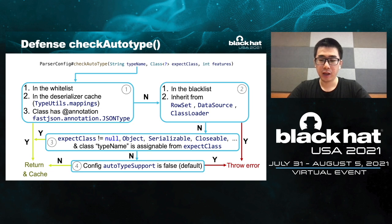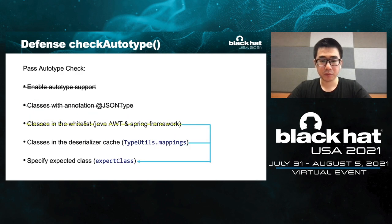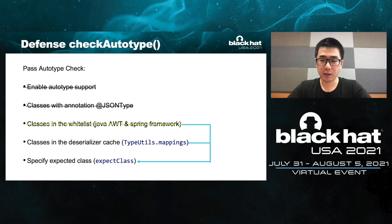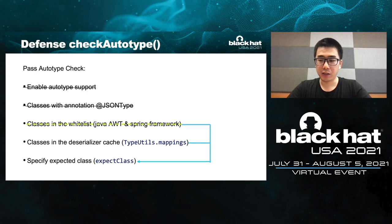Finally, it can't pass the check unless the global flag autoTypeSupport is true, which is always false in the default configuration. To intuitively observe the cases that pass the auto type check, I list them as follows. First, enable the autoTypeSupport flag — that is a rare situation. Next, classes with annotation @JSONType — these classes are not universal and we can't use them anywhere.